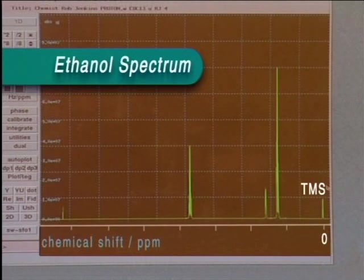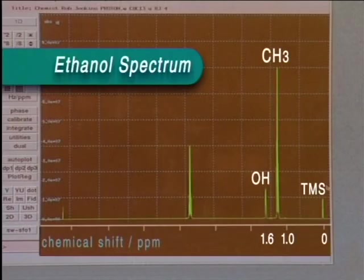The chemical shift of a peak gives information about the molecular environment of the hydrogen atoms that it represents. The peak at around 1 ppm is caused by the CH3 protons. That at approximately 1.6 is the OH proton. And that at approximately 3.5 ppm is from the CH2 protons.